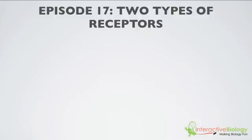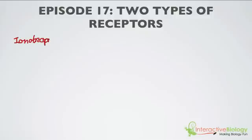The first one is called ionotropic, and the second one is called metabotropic. What we're going to do is look at the ionotropic receptors first.